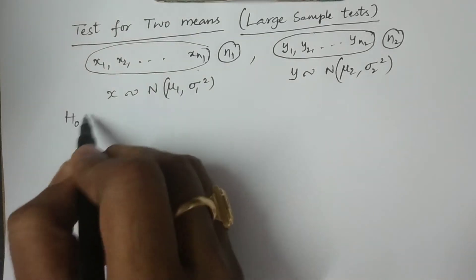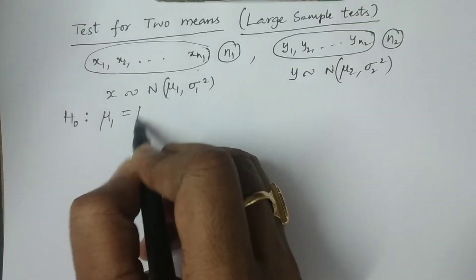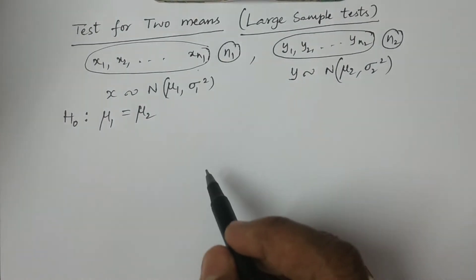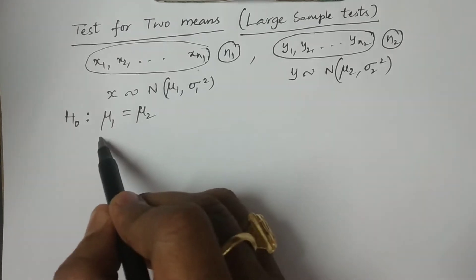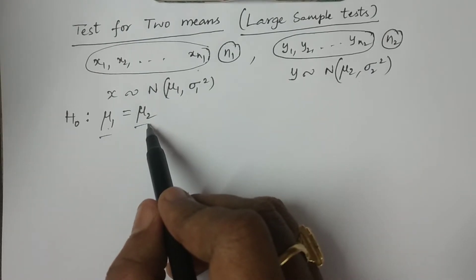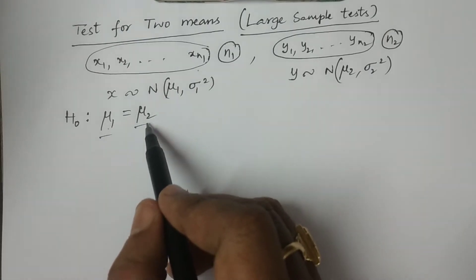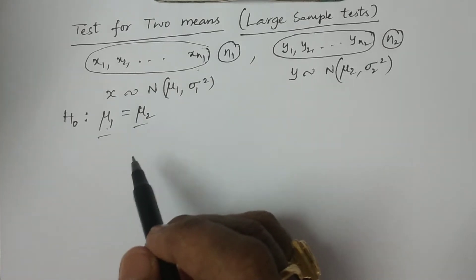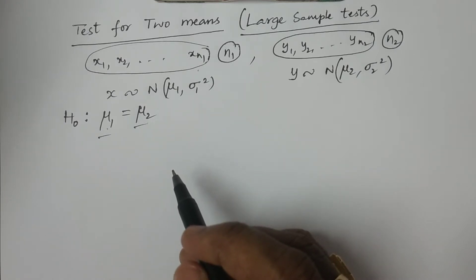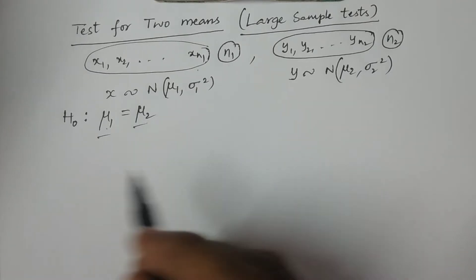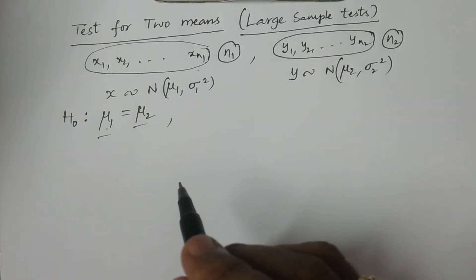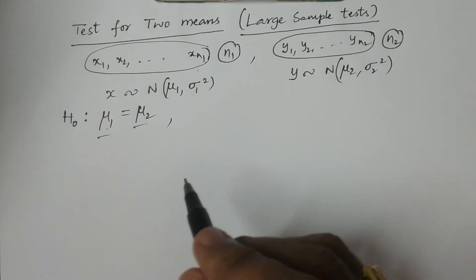Consider the null hypothesis H0, which is mu1 equal to mu2 — the two population means are equal. We can also state there is no significant difference between the two sample means, and that the two samples are drawn from two different populations.